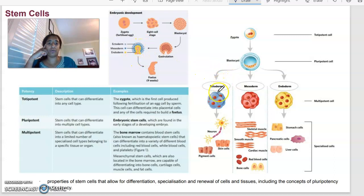And what's going to happen is those three layers are going to form different things. So the ectoderm could form things like your neurons, so your nerve cells. They could form skin cells. They could form pigment cells. Your mesoderm, that's going to form things like your muscles, so skeletal muscle, smooth muscle, cardiac muscle, red blood cells, bone cells. Endoderm is going to form things like stomach cells, pancreatic cells, liver cells. So these are all specialized cells that are going to differentiate.